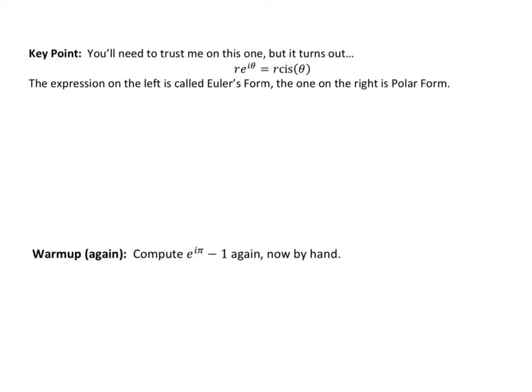So here's our key point that's going to carry us through this entire lesson. You're going to have to trust me on this one. I can't really get into all of the depth of why this works because we need a lot more calculus, and I don't want the video to be that long. But it turns out that r·e to the i·theta means exactly the same thing as r·cis(theta). You got to trust me — this is true. There's a whole lot of really great math for why it happens.